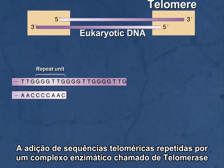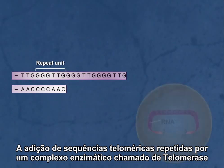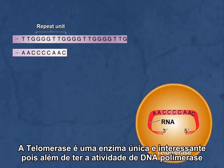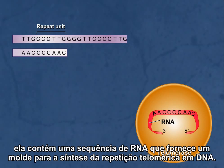The addition of telomeric repeat sequences by an enzyme complex referred to as telomerase assures that this shortening does not occur. Telomerase is a unique and interesting enzyme because, in addition to having DNA polymerase activity, it also contains an RNA sequence that provides a template for the synthesis of telomeric repeat DNA.